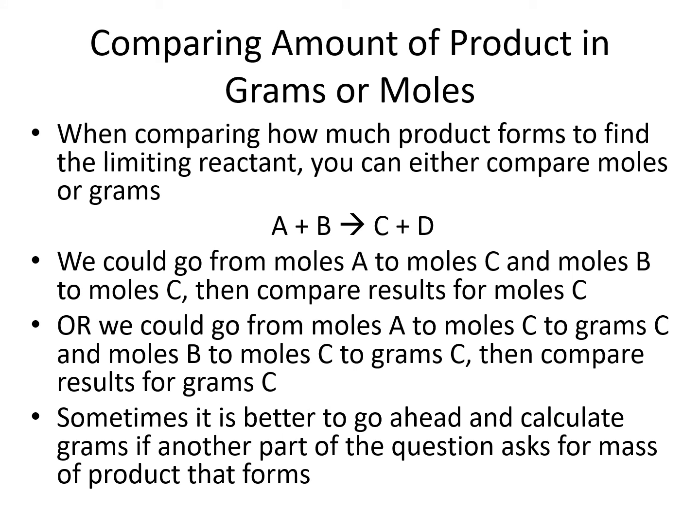When we compare the amount that forms, we can pick any of the products and compare either in moles or grams. We could go moles of A to moles of C, then moles of B to moles of C, and compare moles of C. Alternatively, we could extend each conversion to grams of C and compare grams of C instead. Why would we want to do an extra step and go to grams? It's going to be based on the question being asked. If there's a second part asking how many grams of C are formed, we'd want to compare in grams. But just for finding the limiting reactant, you can do it either way.